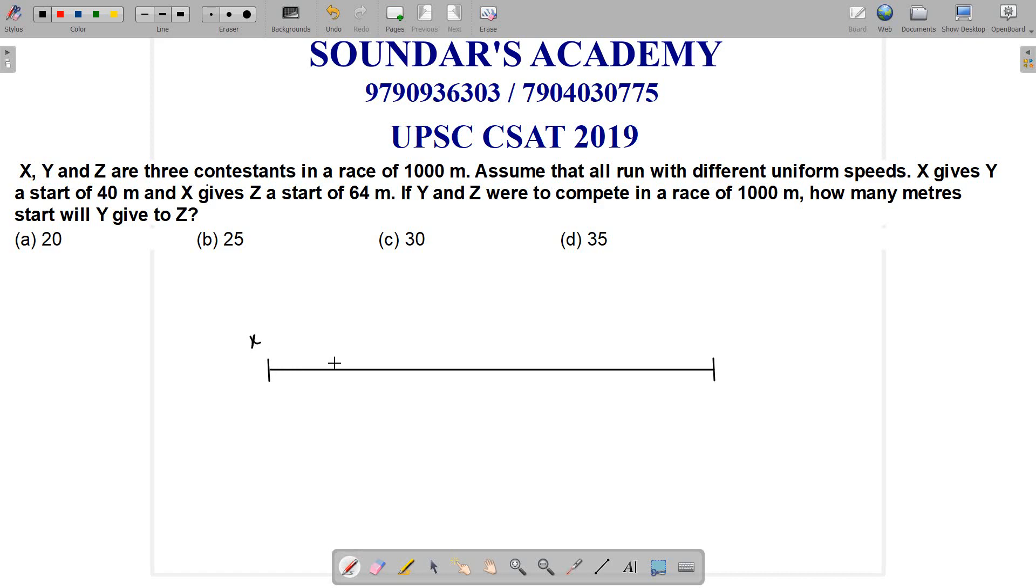X gives Y a start of 40m ahead. X gives Z a start of 64m. That is, the total distance is 1000m. X is the starting point. Y is 40m ahead, Z is starting at 64m ahead in position.